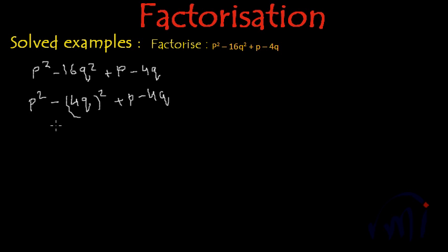And if we see properly, here actually we can use the formula of a square minus b square. And what is the formula of a square minus b square? a square minus b square is equal to a minus b multiplied by a plus b.